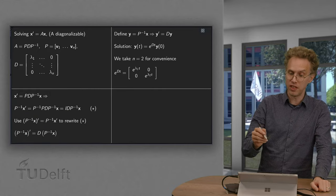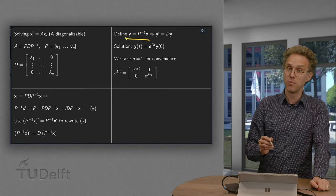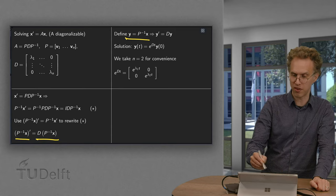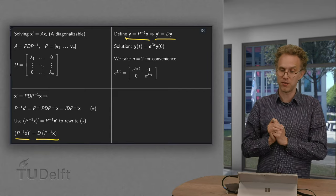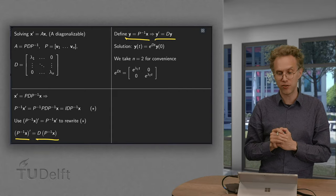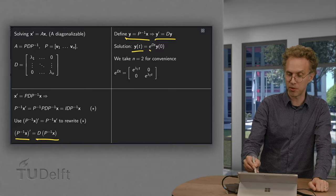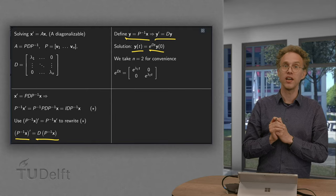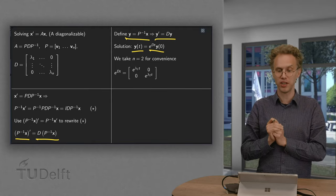Now we define y equals p inverse times x. Because with this definition we find y prime equals d times y. So then we now have to solve the problem y prime equals d times y. That is fortunately easy. We know that y of t equals e to the power dt times y of 0, and because e to the power dt is easy to compute we can write down the solution immediately.